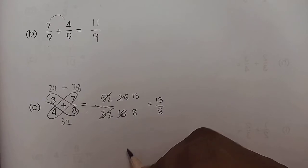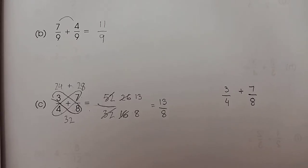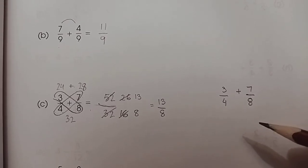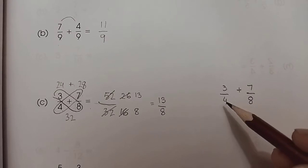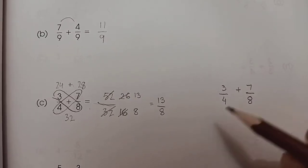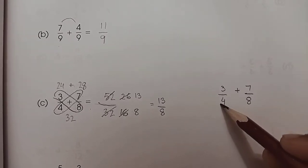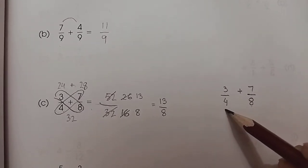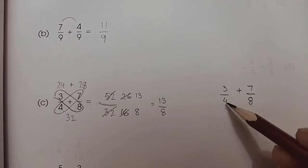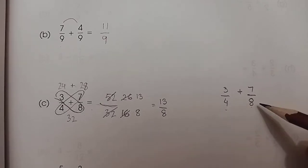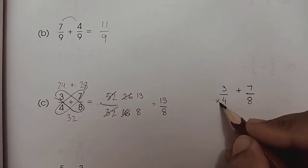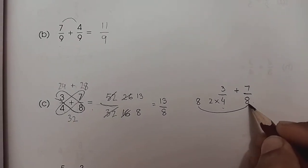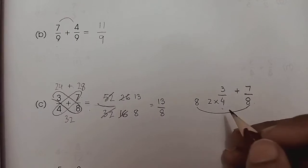That was method one. The second method works when one denominator is a multiple of the other, making it easier to solve. For example, 4 and 8 are multiples and factors of each other — 4 is a factor of 8 and 8 is a multiple of 4, because 8 comes in the table of 4. So we multiply 4 by a number that gives us 8. We multiply by 2 to make the denominator 8, so now both denominators are the same.